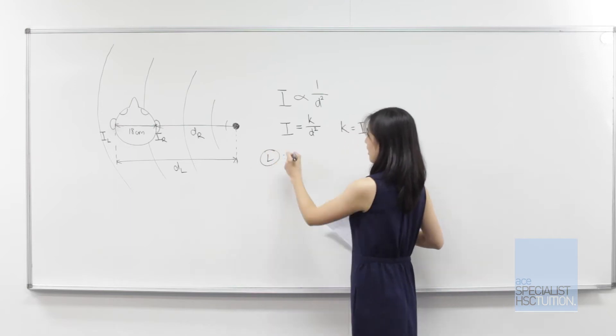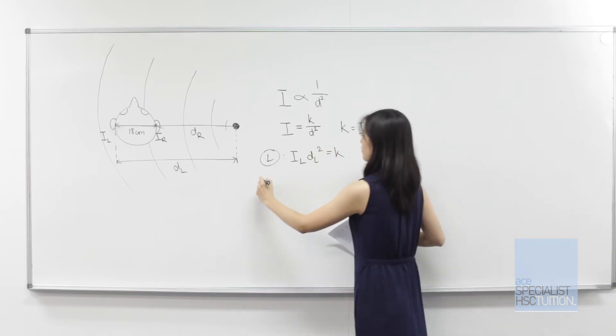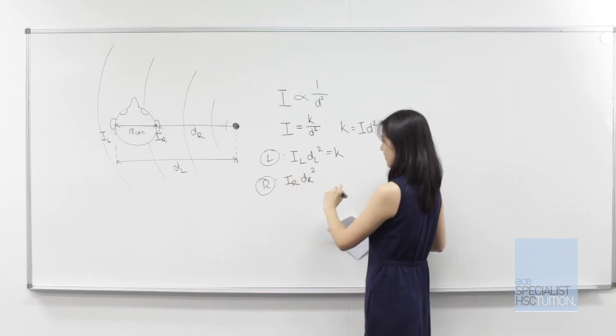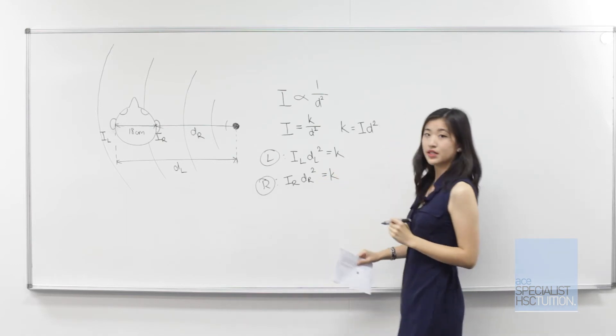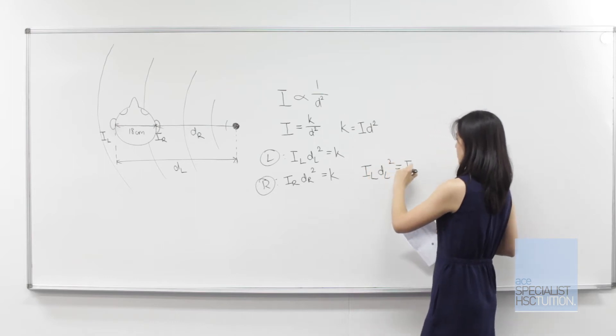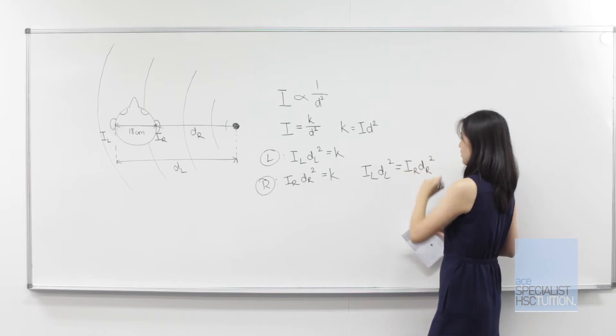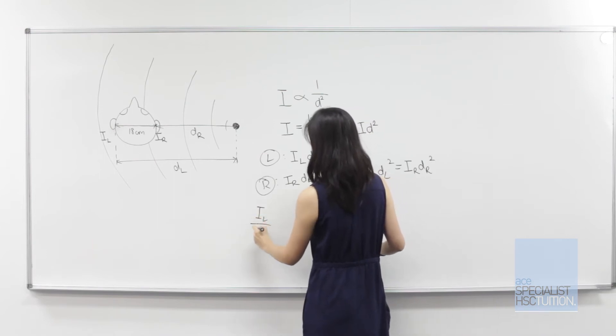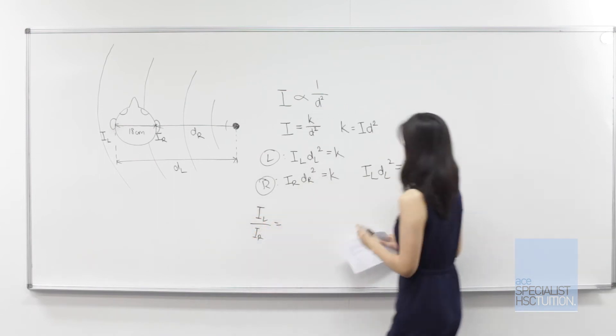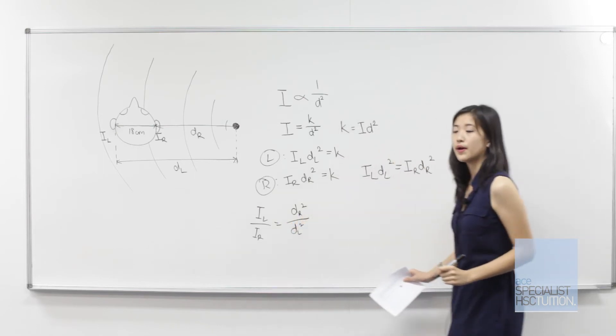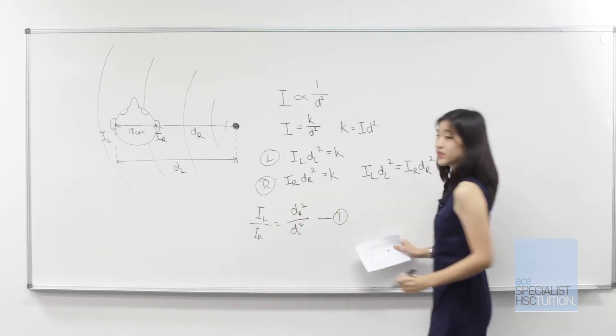Let's apply the inverse square law to both ears. On the left, we have il multiplied by dl squared equals k. On the right, we have ir multiplied by dr squared equals k. Now we can equate these two, so il dl squared equals ir dr squared. If we rearrange that, we get il over ir equals dr squared over dl squared. Let's call this equation one.